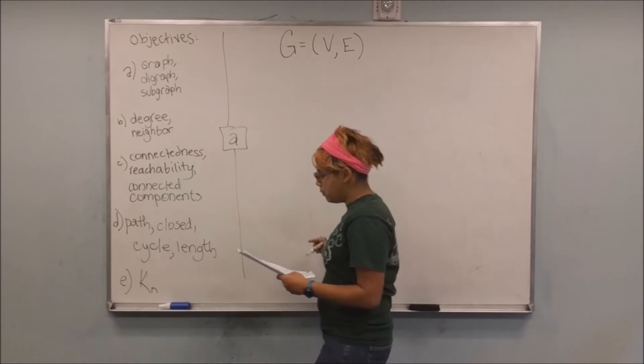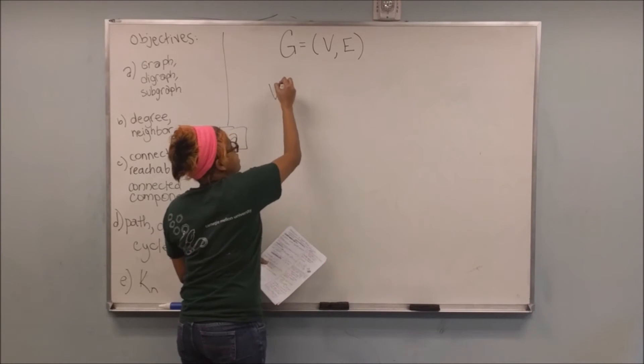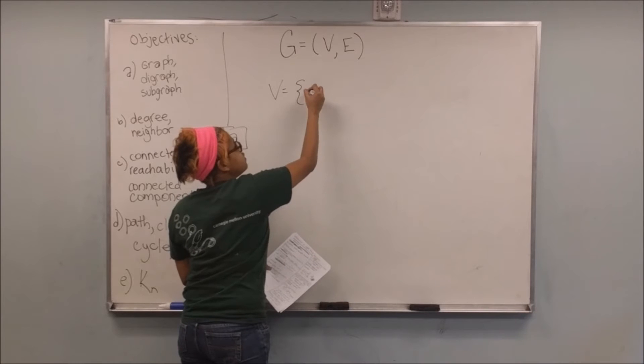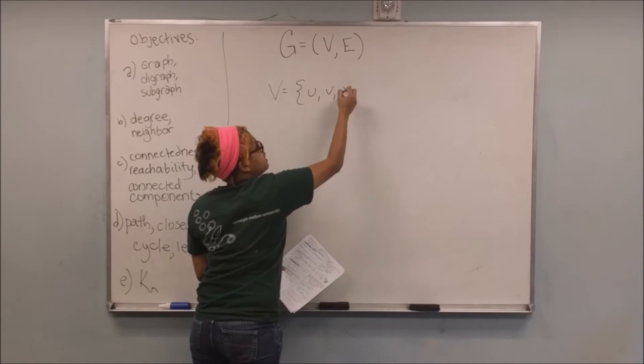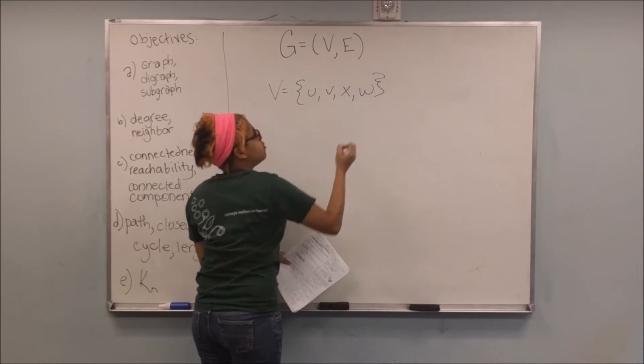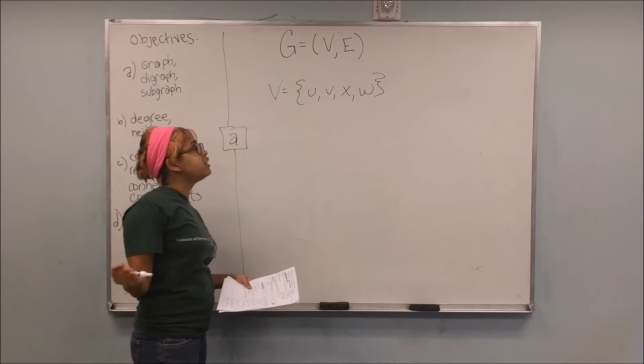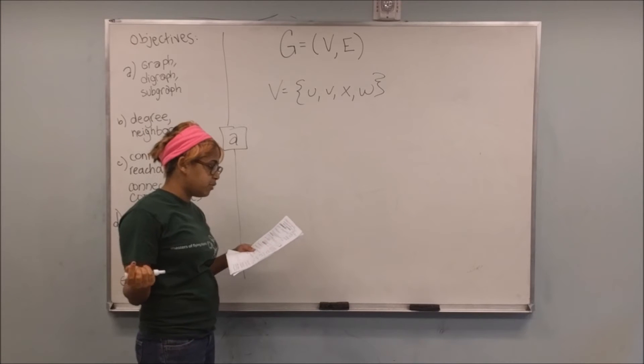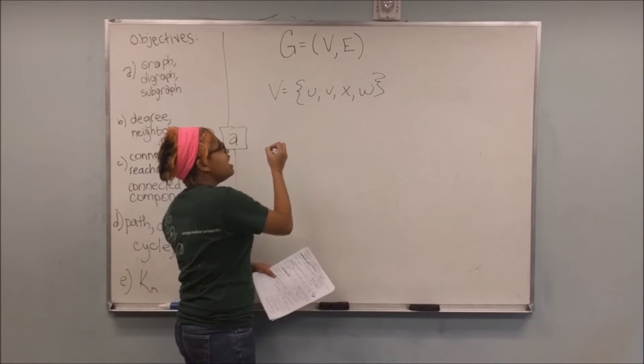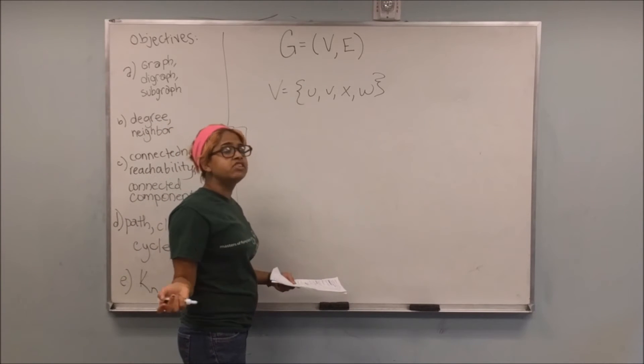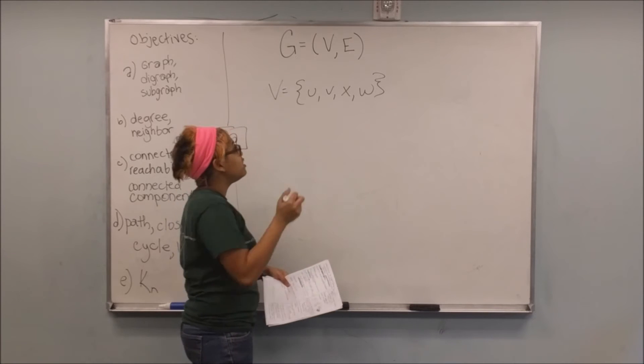So for example, I might say in this case, let's have the set U, V, X, W. Alright, so I just have a set of nodes. I can name them however I want. In this case, I wanted to name them U, V, X, W. Alright, and edges are going to just consist of pairs from within the vertices.